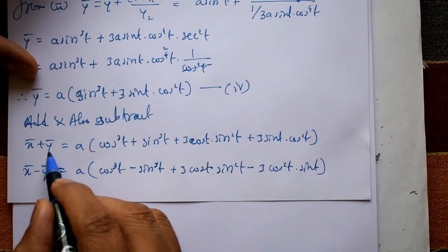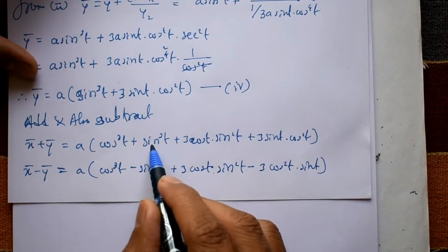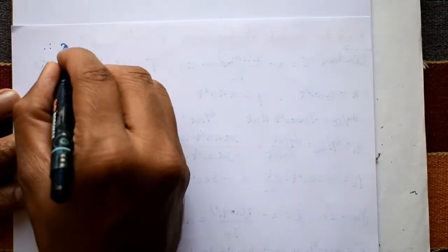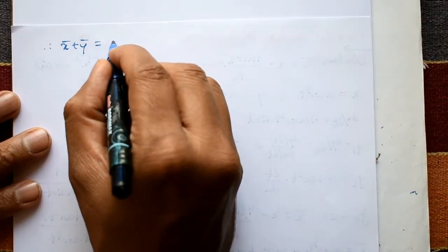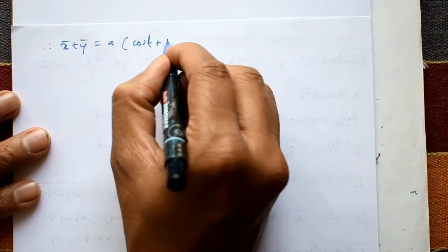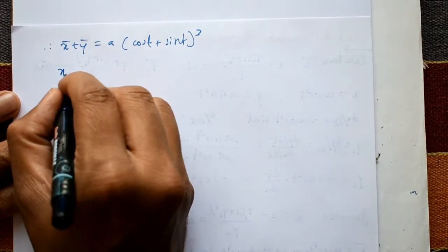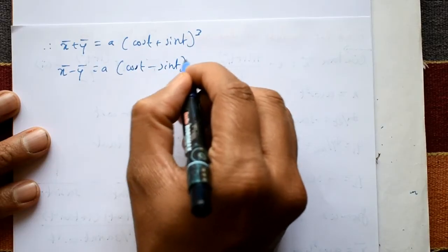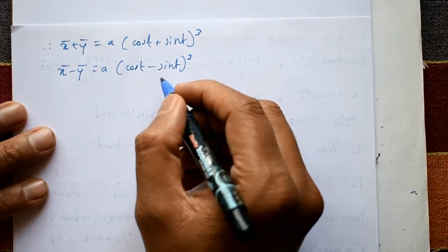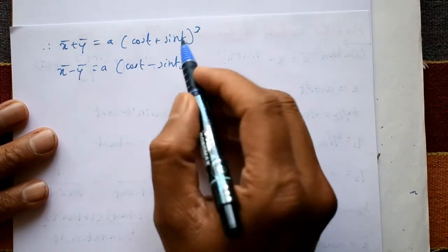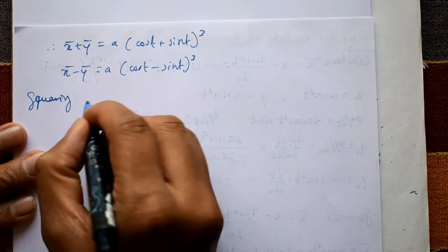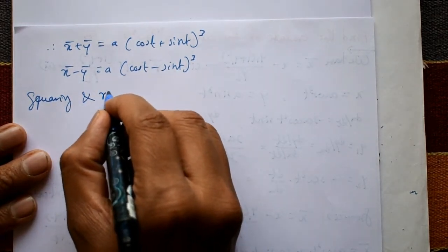Recognizing these as algebraic identities: x̄ + ȳ = a·(cos(t) + sin(t))³ using the (a+b)³ formula, and x̄ - ȳ = a·(cos(t) - sin(t))³ using the (a-b)³ formula. Now we eliminate t by squaring and raising to the power 1/3 on both sides.